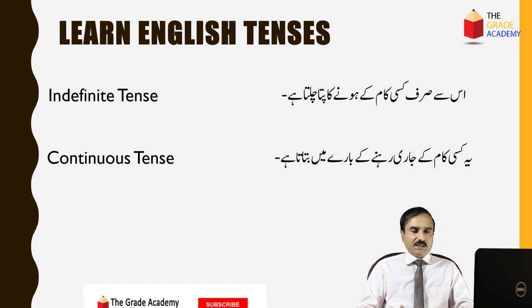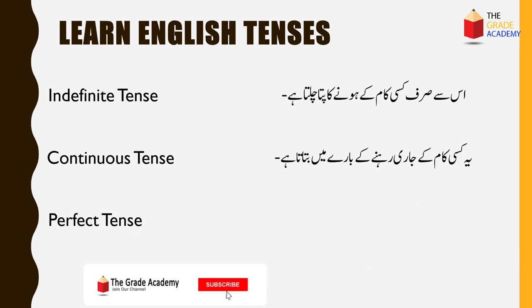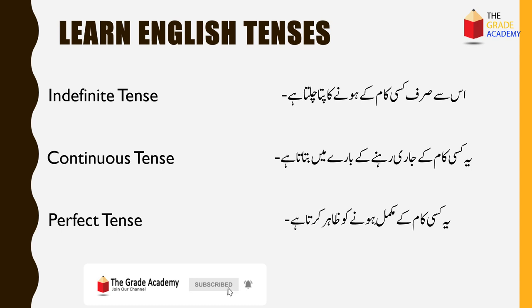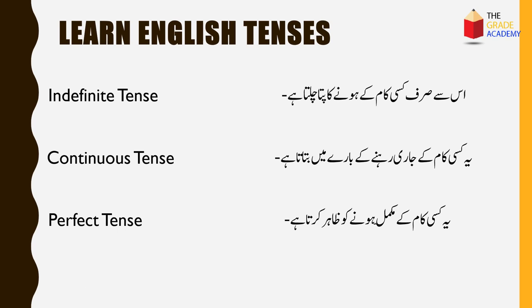Perfect tense जो है, यह किसी काम के मुकम्मल होने को ज़ाहिर करता है। मिसाल के तौर पर — वो स्कूल जा चुका है, वो स्कूल जा चुका था, या वो स्कूल जा चुका होगा।